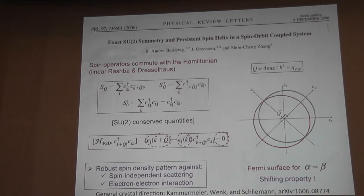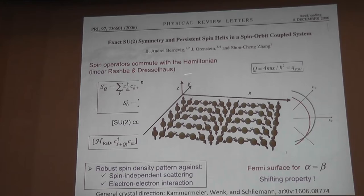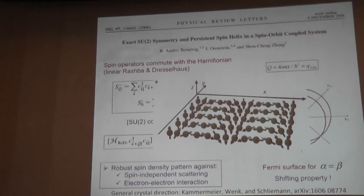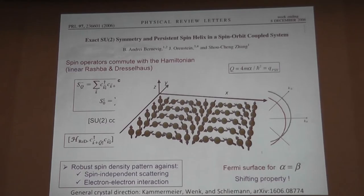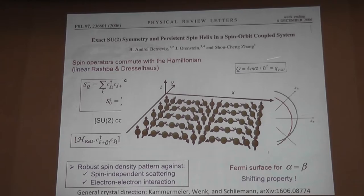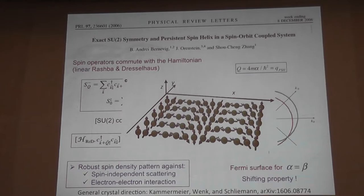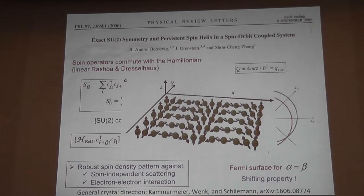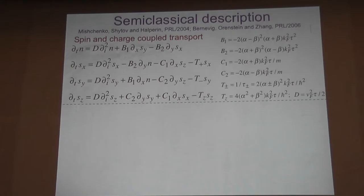For the system of interest that's been realized experimentally, I end up with a few coupled equations. With initial conditions in the z-component as a cosine of Q times x, injecting electrons along the x direction, I can solve this to get a double exponential decay with exponentials depending on Q and time. The two modes correspond to two helical patterns. If I tune Q to be precisely the PSH value - capital Q equal to 4m*alpha_1/ℏ² - then the exponential goes to zero and eventually the long-lived mode remains, giving the persistent spin helix.